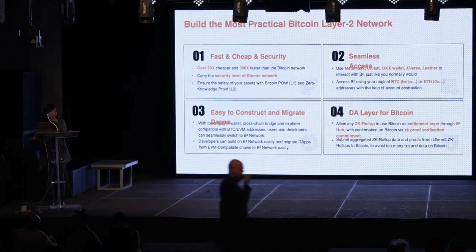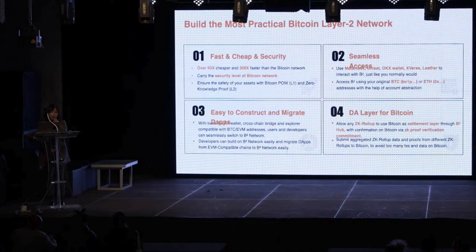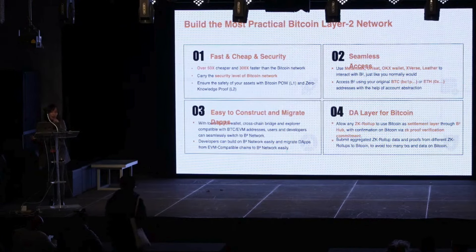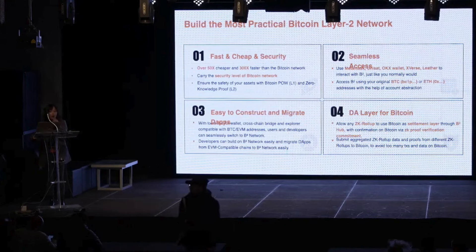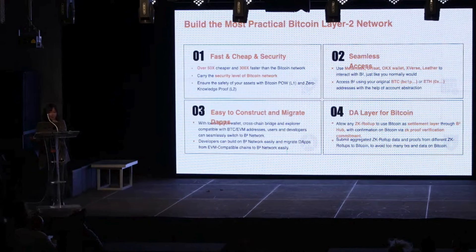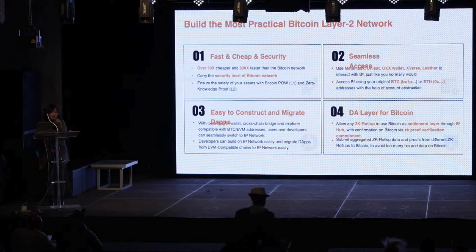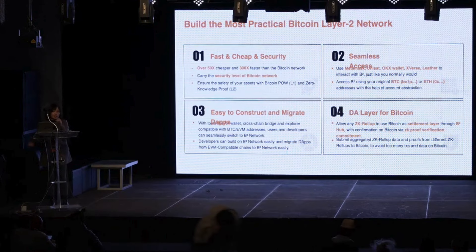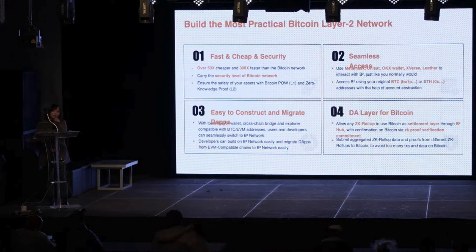Secondly, we support seamless access for users. We have already integrated with many popular wallets like MetaMask, Uniswap Wallet, OKX Wallet, etc. Also, by using an account abstraction solution, we support users using their original BTC or ETH addresses. Third, this will be an EVM-compatible chain, meaning users and developers can use their familiar tools and languages to build their own DApps and also migrate from other ecosystems to B-squared Network.